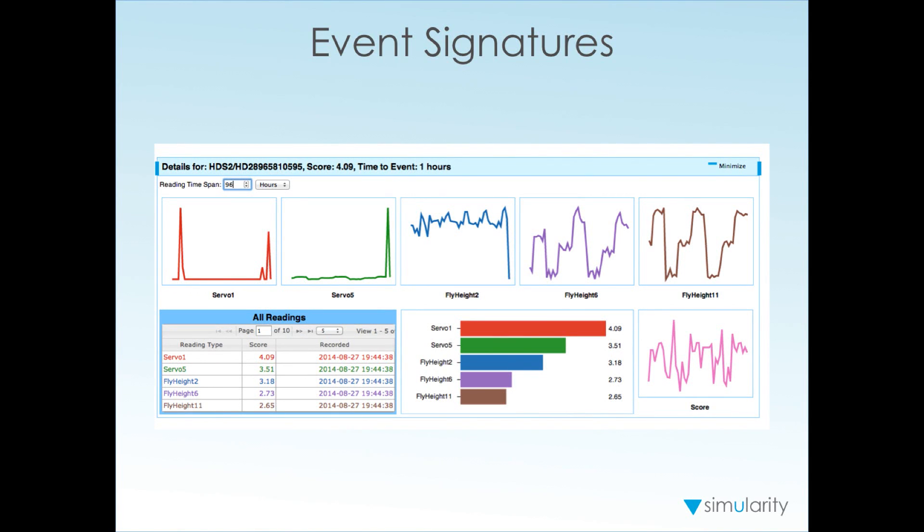Here's an example of what an event signature looks like. For this event that we predict will happen in one hour, the five sensors out of the 53 that we think are most predictive are servo 1, servo 5, fly height 2, fly height 6, and fly height 1. Here we indicate the relative significance of each of those. We think that this pattern of behavior on servo 1 is the most predictive sensor pattern of this particular event.